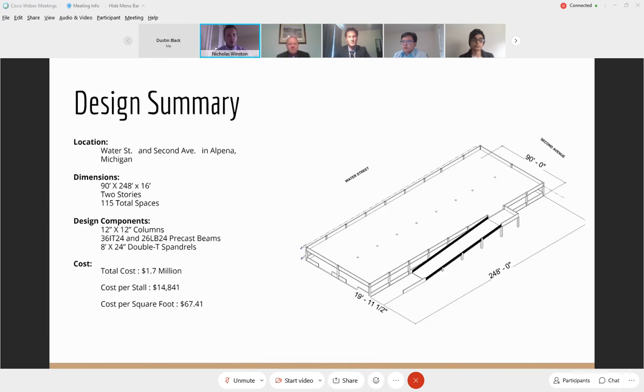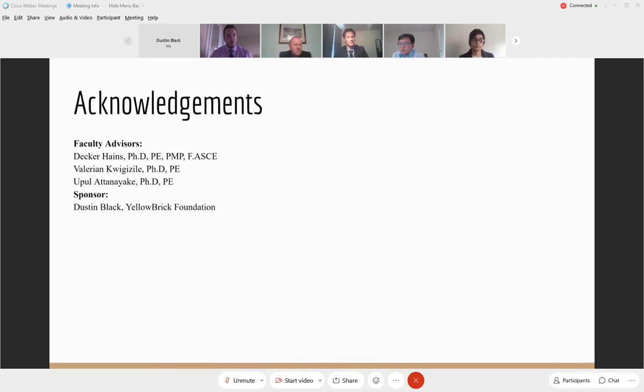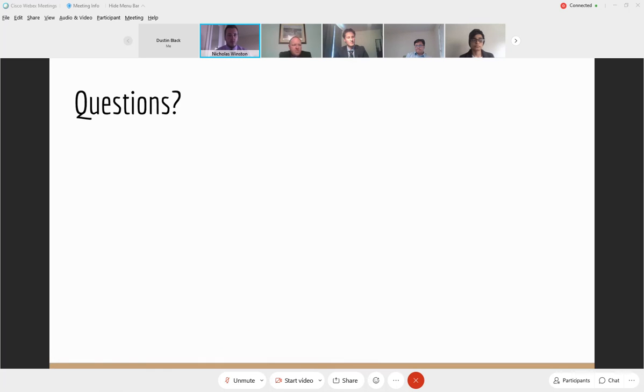So for the overall design summary, our group decided with what we were given to have precast concrete. We had an exterior ramp to maximize the spaces inside our parking structure which is located on the back end of our parking structure. We got 114 spaces in our parking structure with a total cost of little over 1.7 million dollars. Here's our acknowledgements. Our professor Dr. Haynes, Dr. K, Dr. Ataniaki, and then our sponsor Dustin Black AHB. And with that we are open to questions.